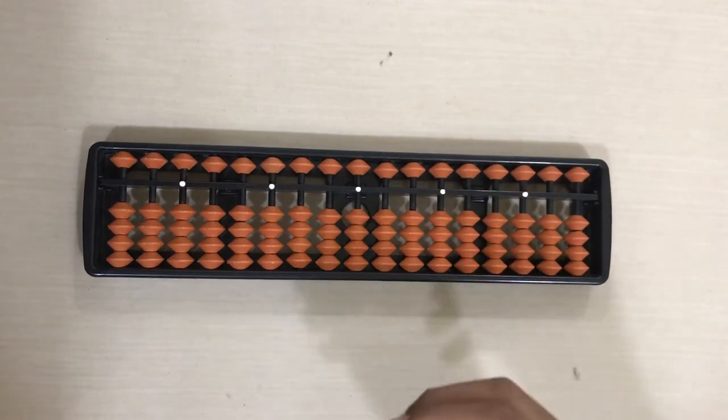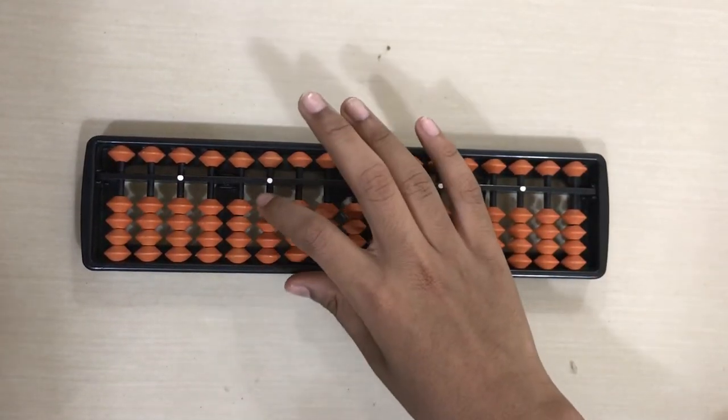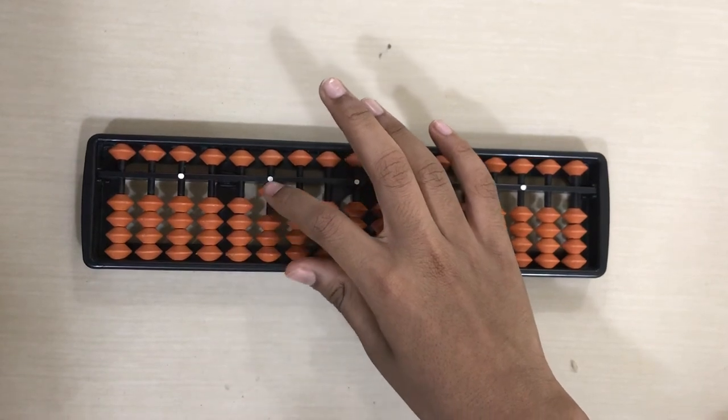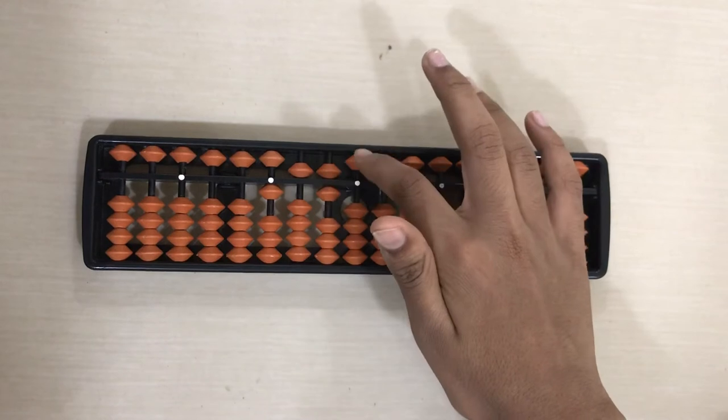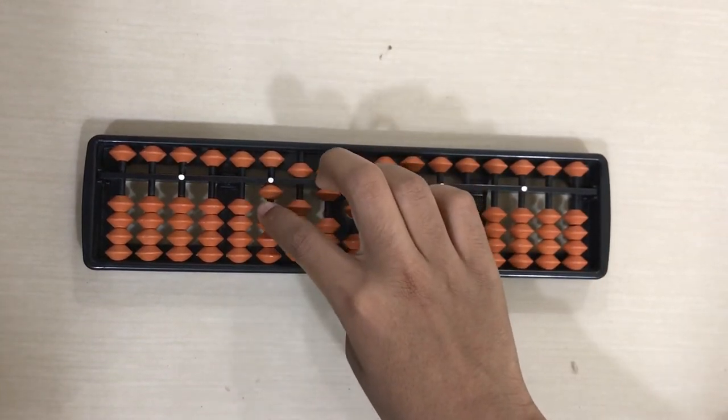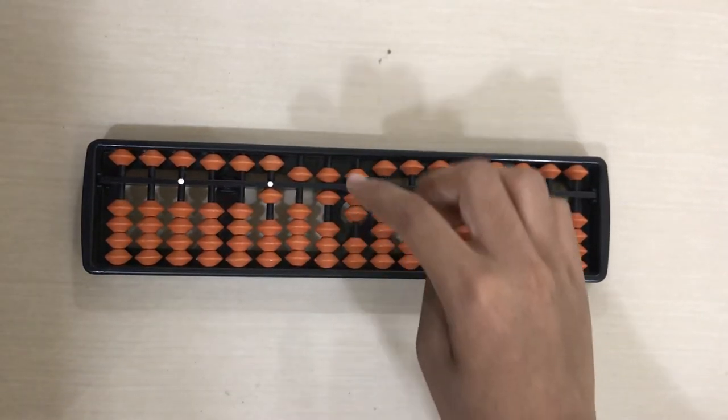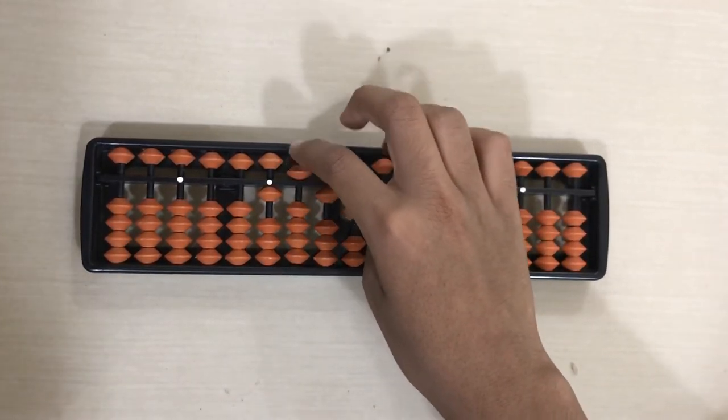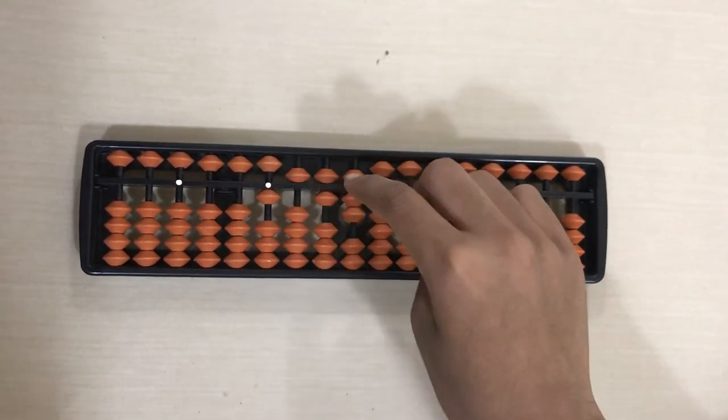For example, I am going to be doing 1567. This is thousands place. Thousand, five hundred and sixty-seven. So this is the thousands place, I moved one earth bead up. Then I moved this. This value is 5 for the hundreds place. One thousand, five hundred.